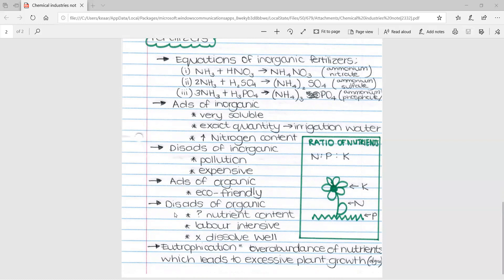However, there are quite a few disadvantages of organic fertilizers. First being you don't know the exact nutrient content in your fertilizer. Second being it's very labor intensive. And third, it doesn't dissolve well into the soil and isn't absorbed as well by the plants.